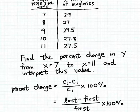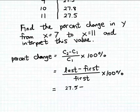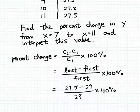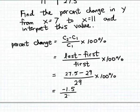Let's fill those into our percent change formula. The last value is 27.5, the Y value corresponding to X equals 11. Our first value is 29, the Y value corresponding to X equals 7. So we have 27.5 minus 29, divided by 29, multiplied by 100%. That gives us minus 1.5 divided by 29, times 100%.